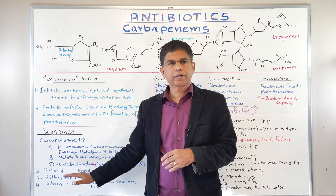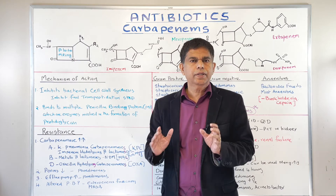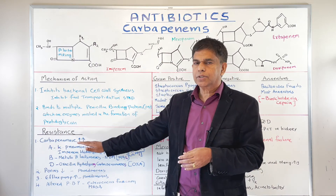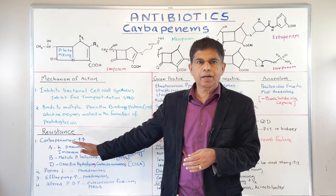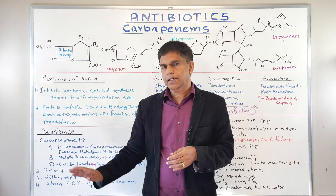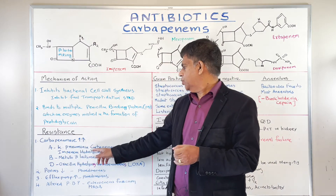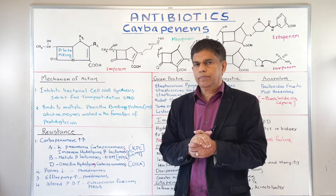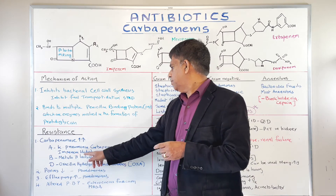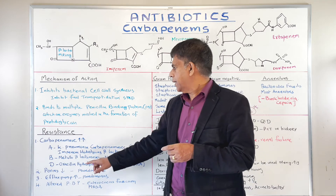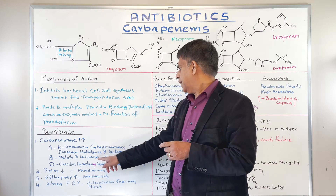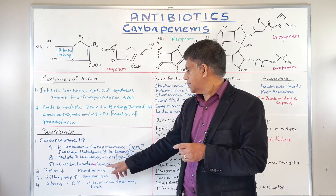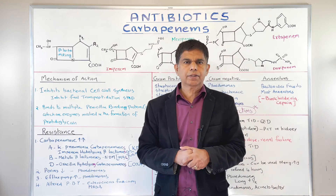Unfortunately, resistance to carbapenems is developing. How do bacteria produce carbapenem resistance? First, increased production of carbapenemases. There are three types: Klebsiella pneumoniae carbapenemase (KPC), which is very common; imipenem-hydrolyzing beta-lactamase (IMI); and metallo-beta-lactamases (NDM/MBL). There are also oxacillin-hydrolyzing carbapenemases (OXA) — you may see the term OXA.